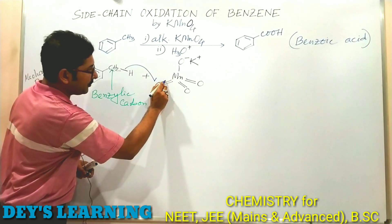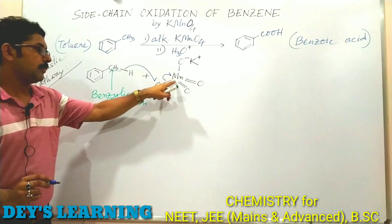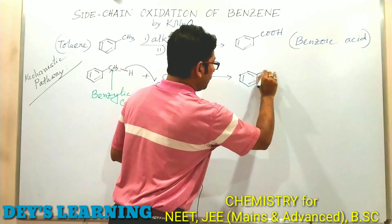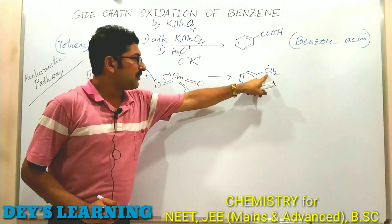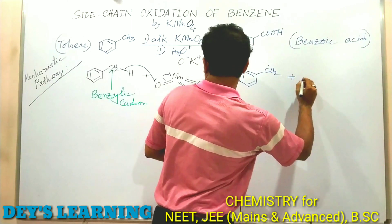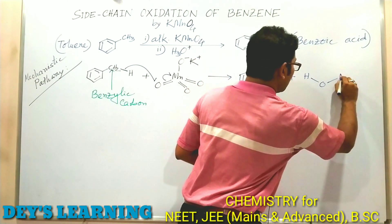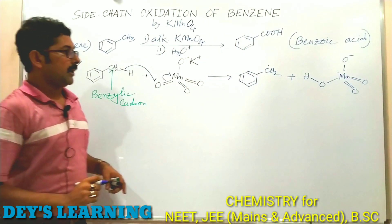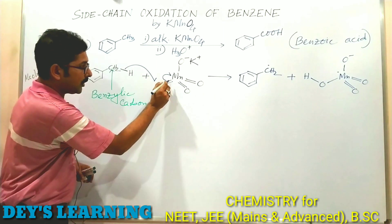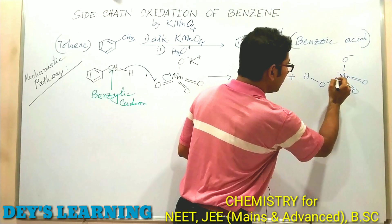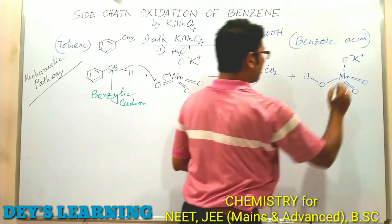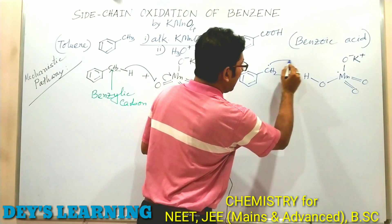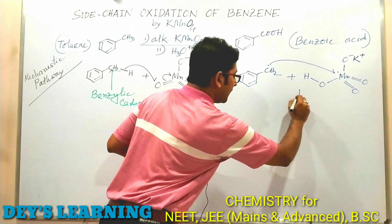On homolytic cleavage, one electron of the C–H bond goes to the oxygen of permanganate and the other to the carbon, giving a benzylic free radical (Ph–CH₂•). This is a very stable free radical. The manganese portion becomes •MnO₃⁻ — an odd-electron Mn(VI) species. Manganese now has an odd electron in its outermost shell, so it can accept another electron from the benzylic carbon.